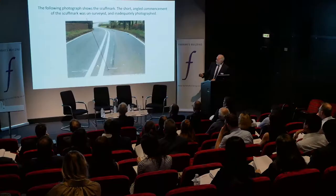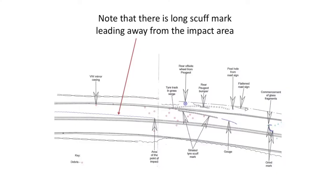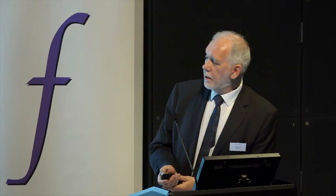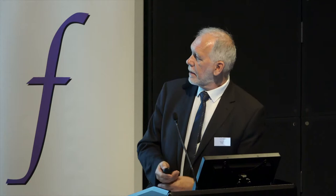There is a short angled commencement of the scuff mark which was unsurveyed and inadequately photographed. Nonetheless, there was a tie scuff mark that didn't appear in the evidence from the police. The angle and length of this short scuff mark was of importance, because it could potentially identify the correct collision point rather than the collision point assumed by the police collision investigator.